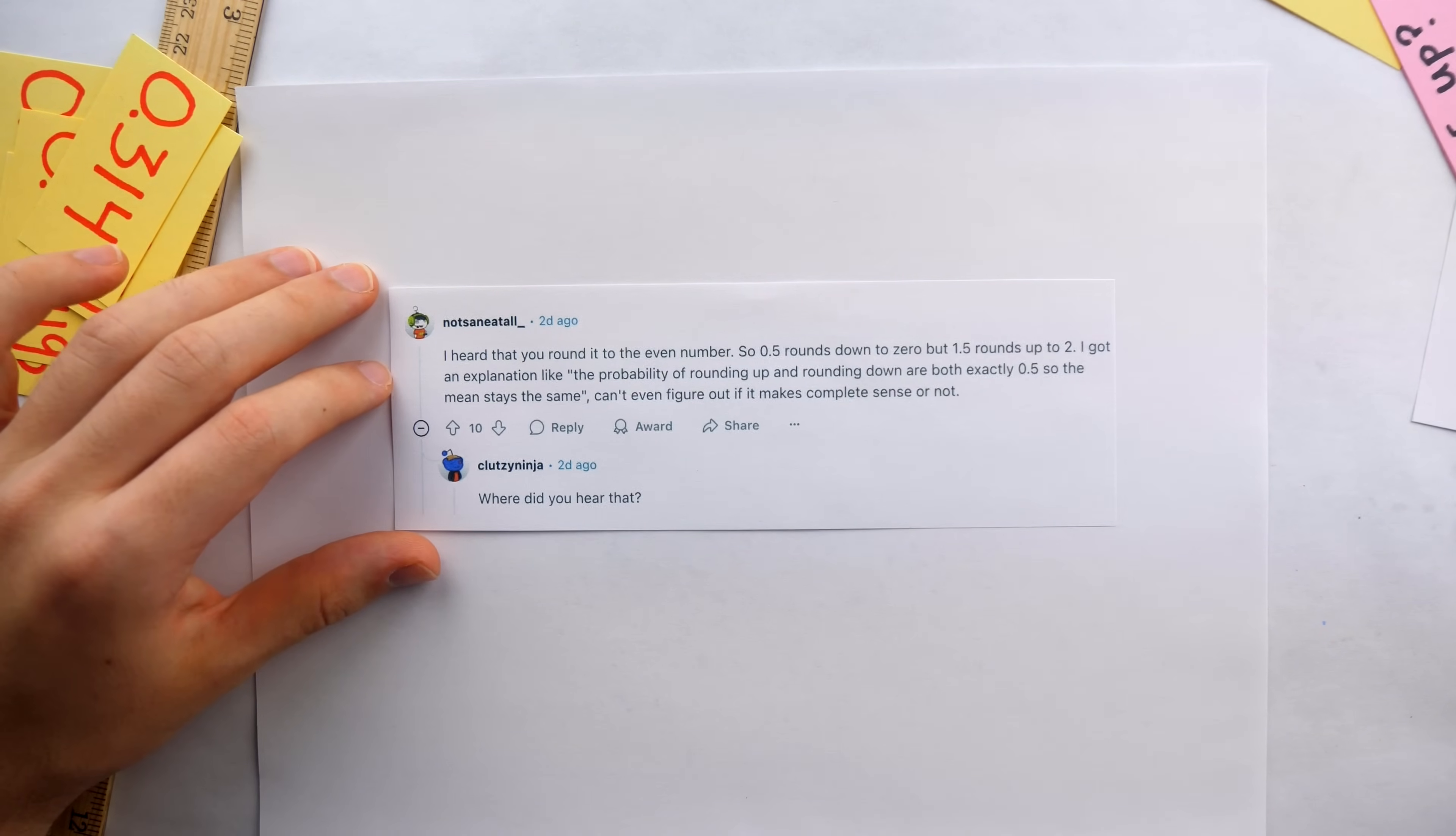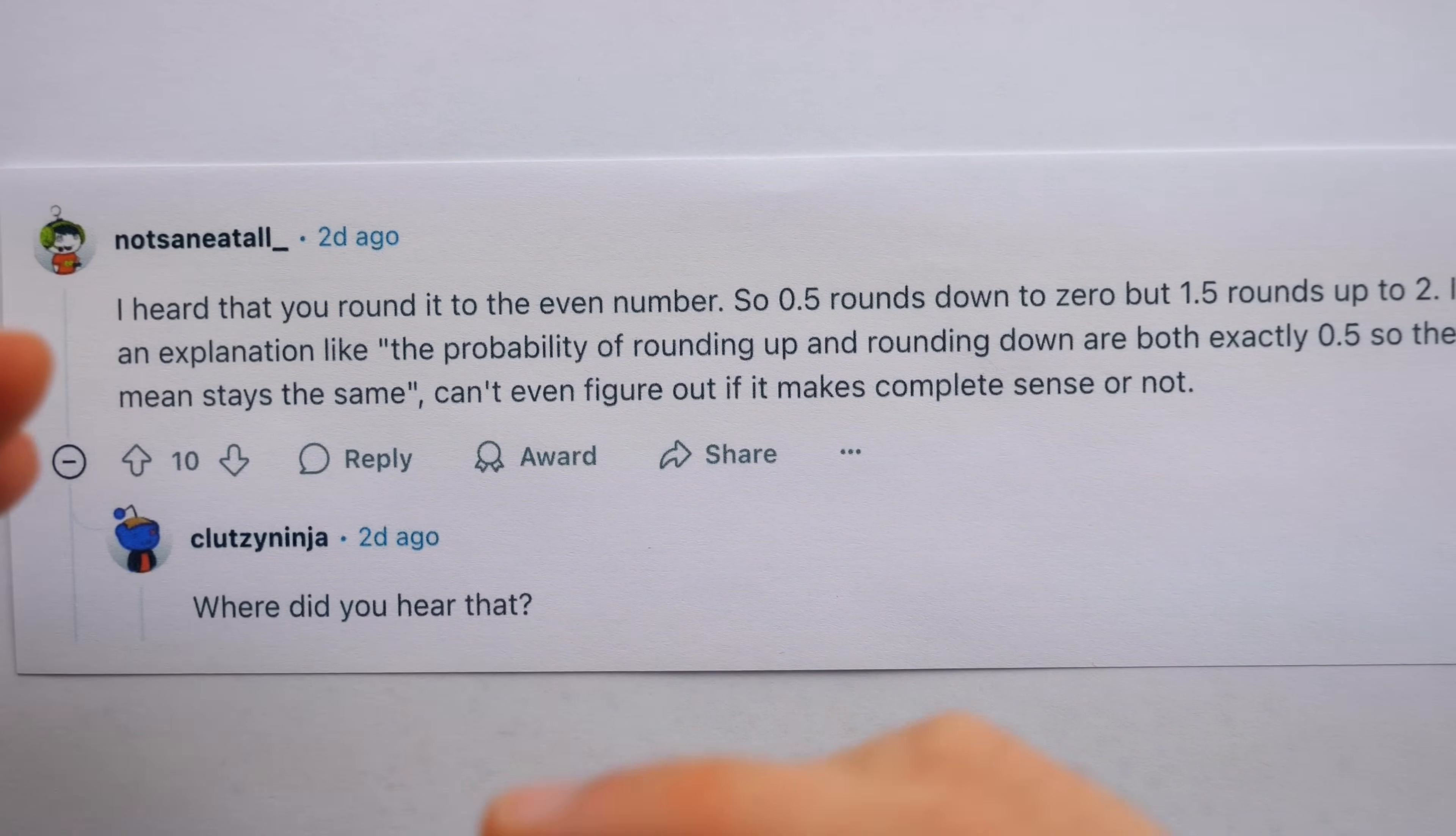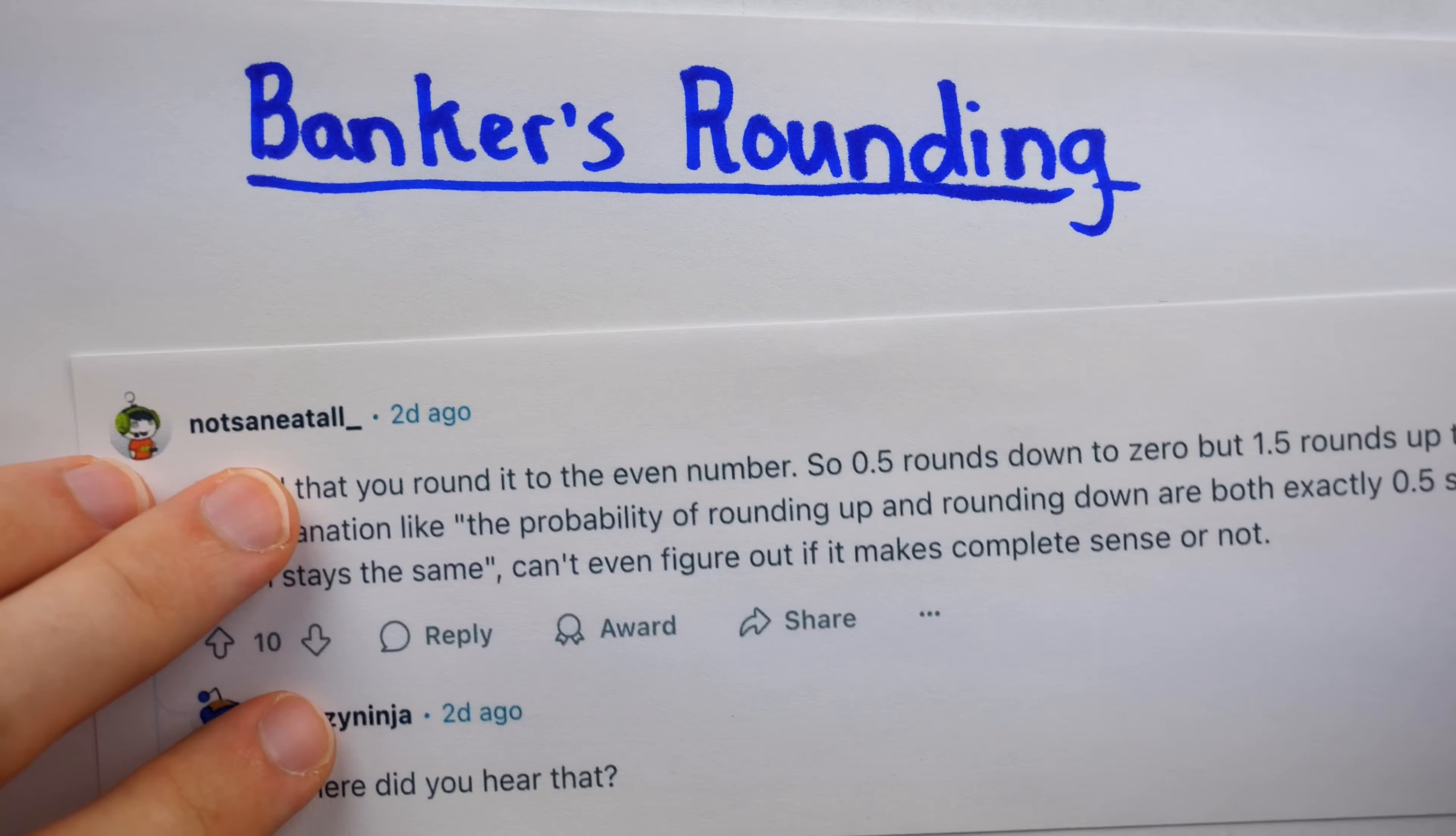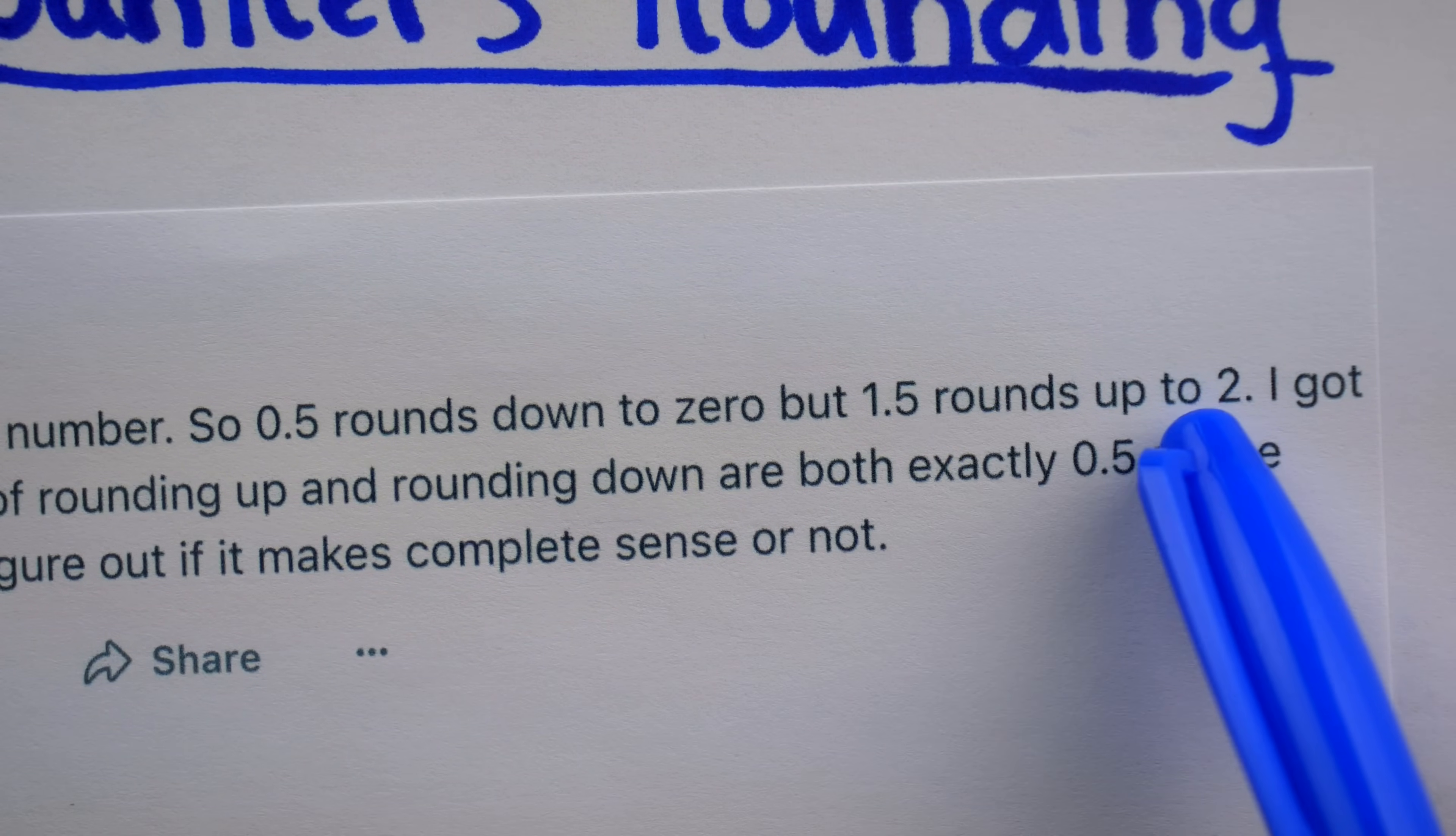One interesting comment on the original thread said, I heard that you round it to the even number. Klutzy Ninja said, where did you hear that? Indeed, this may sound exotic to a lot of us. Turns out, this is something called banker's rounding, and is a way to keep the rounding fair, so to speak. Quickly looking back at the explanation in the comment, not sane at all, says that 0.5 rounds down to 0, the even number, but 1.5 rounds up to 2, again, the even number.